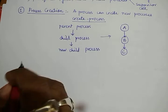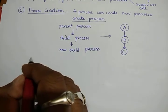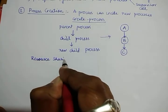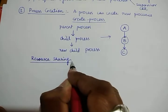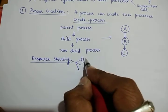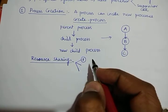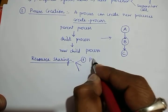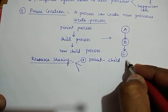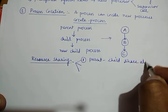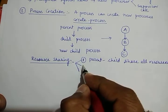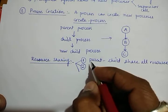When a process creates another process, which in turn creates a hierarchy, the question arises: how do they share their resources? How is resource sharing done? There are three possibilities. The first possibility is that the parent and child both share all resources.